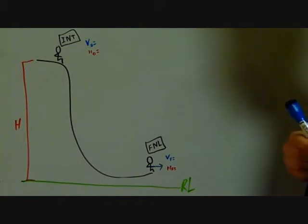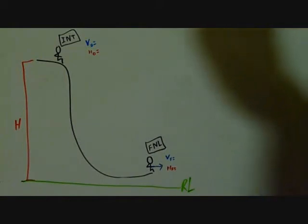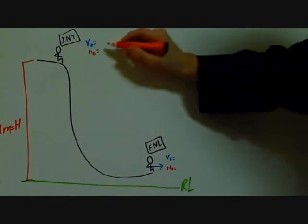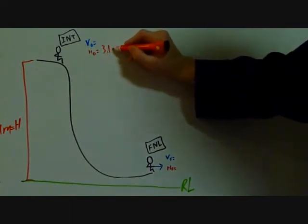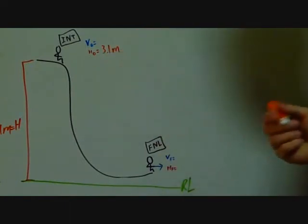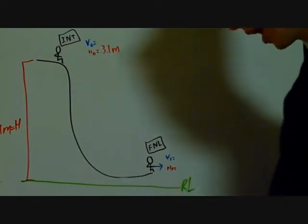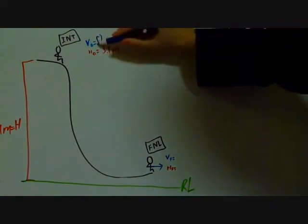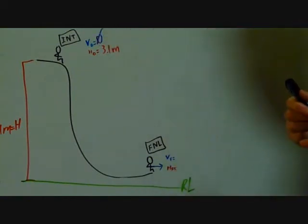The next step is to fill in what we know. We know that the height of the slide is 3.1 meters. Therefore, the height initial will be 3.1 meters as well. We know that the person is not moving at the initial point. Therefore, their velocity initial will be 0.